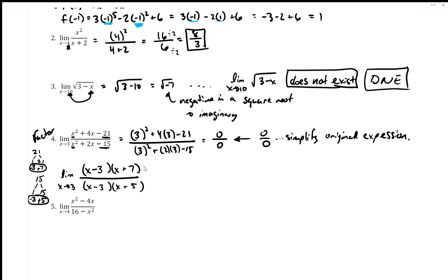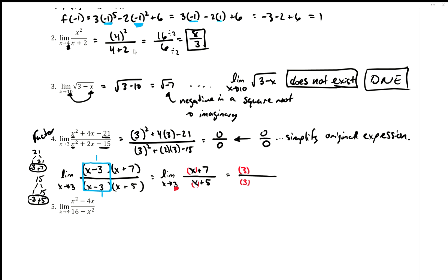Now I can see that (x - 3) appears in both the numerator and denominator, so those cancel to make 1. What's left is the limit as x approaches 3 of (x + 7) over (x + 5). Now that I've simplified, I can plug in 3: numerator becomes 3 + 7, denominator becomes 3 + 5.